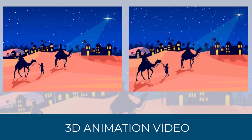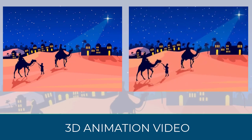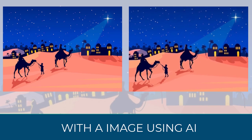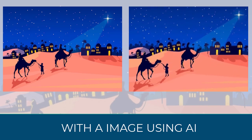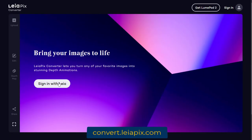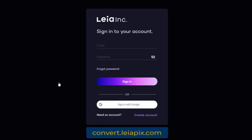In this video, I will show you how you can create an animated video like this with an image using AI. First, we need to go to convert.layapix.com. We need to register and log in to their site.